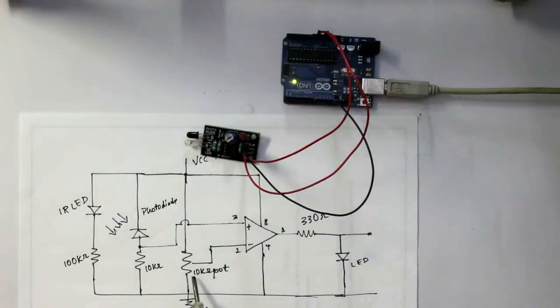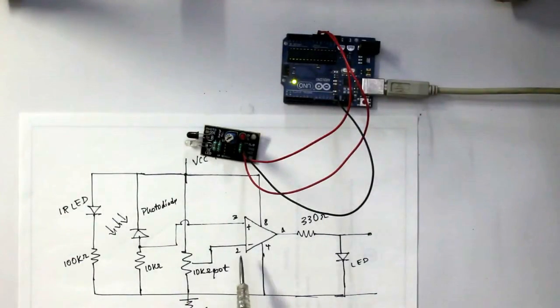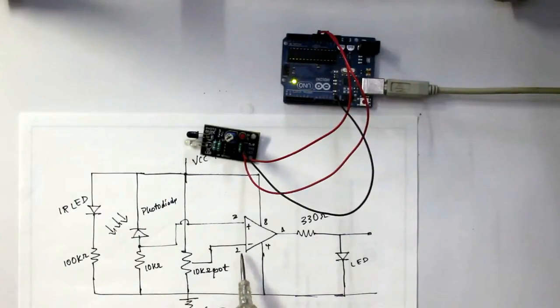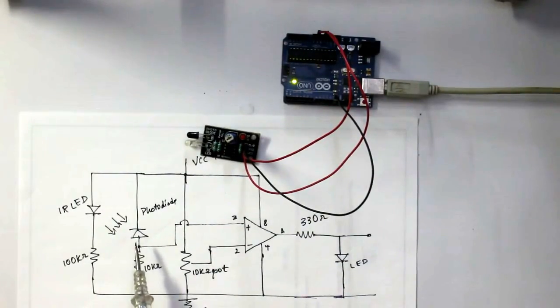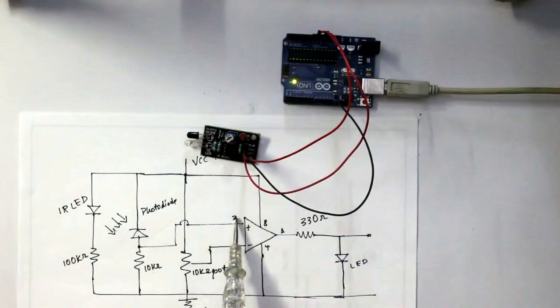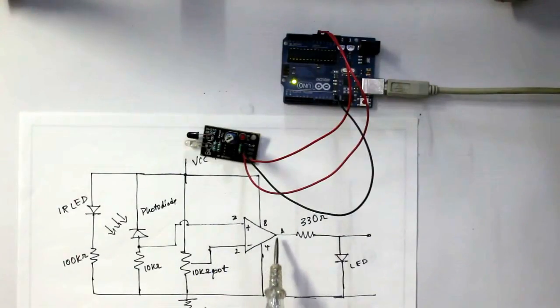This potentiometer is varied to adjust the voltage given to pin number 2. If it is kept very low, then a low voltage at pin number 3 is enough for detection.